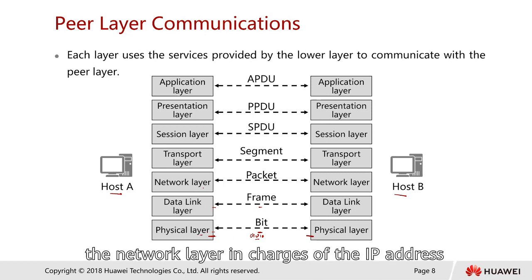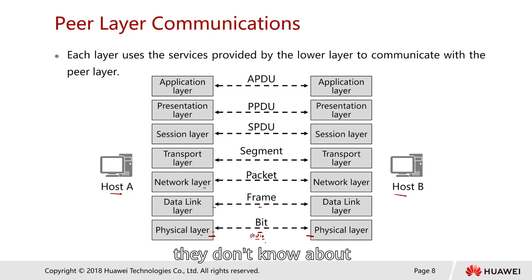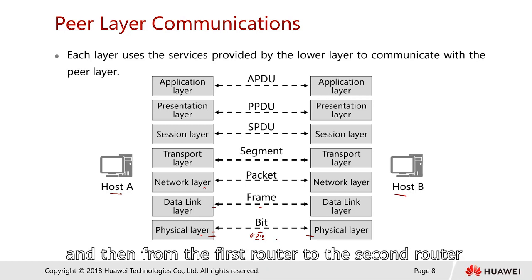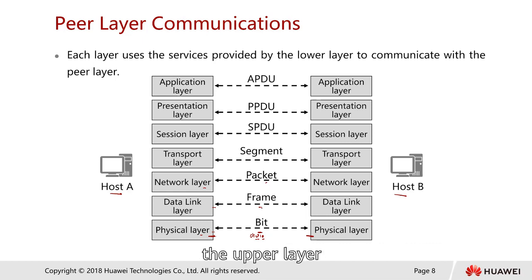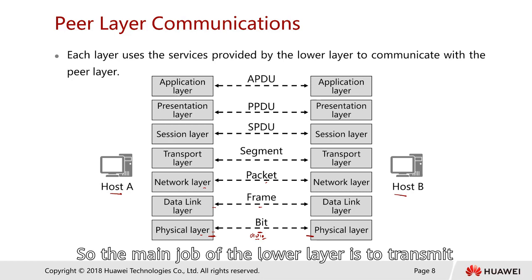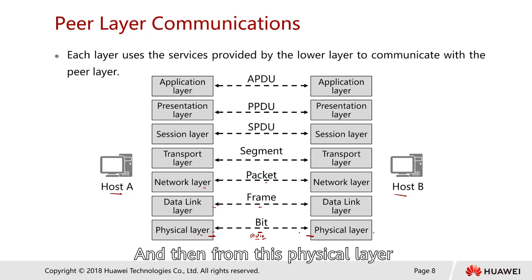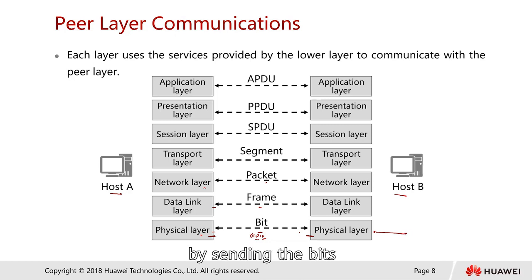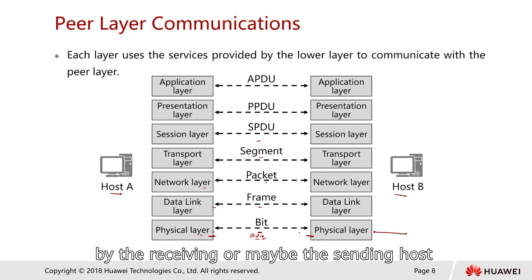For example, the network layer is in charge of the IP address. From a physical layer point of view, it doesn't know why it needs to send traffic to a first router and then to a second router — everything is handled by the intelligence of the upper layers. The lower layer's main job is to transmit information from one point to the next point. Each layer can only be understood by the corresponding receiving or sending host.